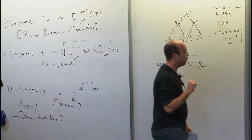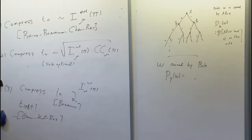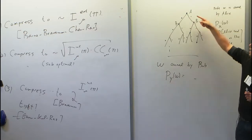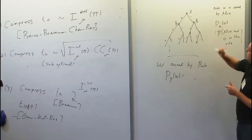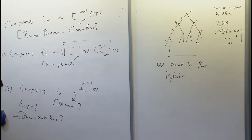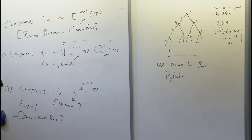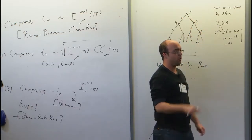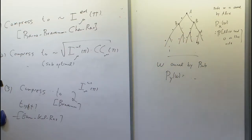Nodes in the tree correspond to partial transcripts. For example, a node represents the prefix where Alice sent 1, Bob sent 1, Alice sent 0, and so on. The probability of reaching a specific leaf is the product of all these probabilities over the path from root to leaf. This is a convenient model for protocols.